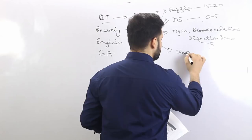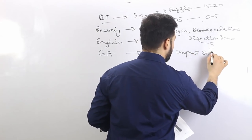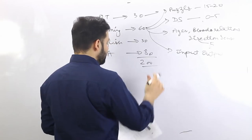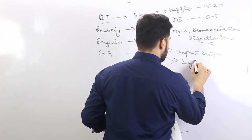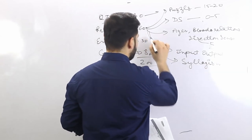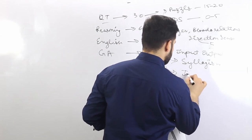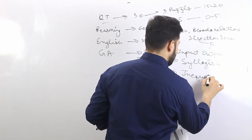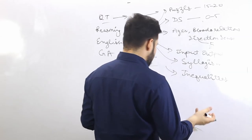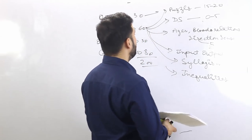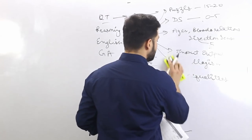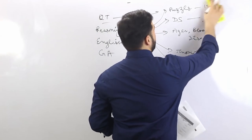There will also be syllogisms, inequalities — five marks each. Then logical reasoning will be there. That's how the 60 marks are made up. That's all for the reasoning part.